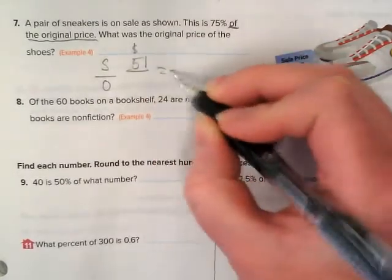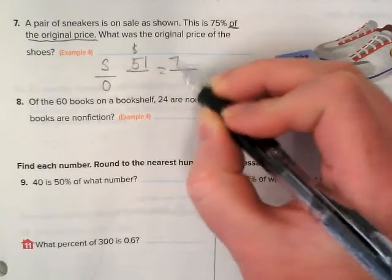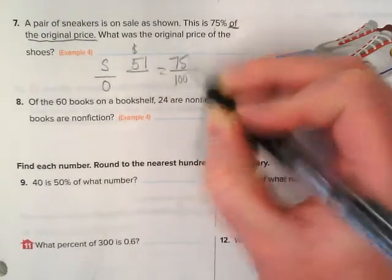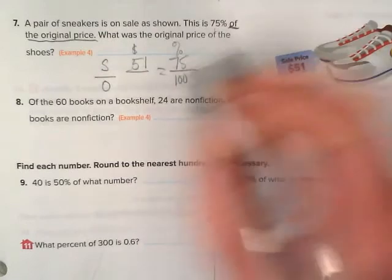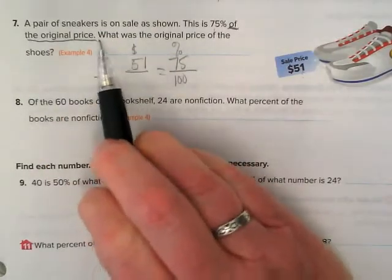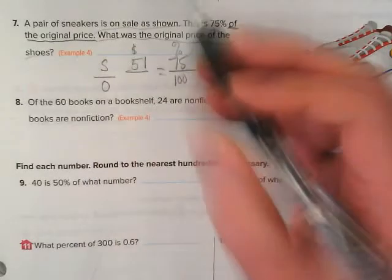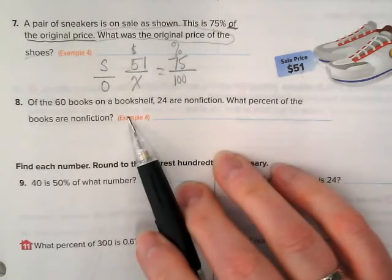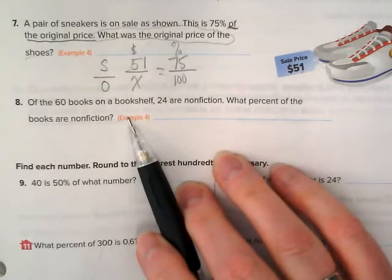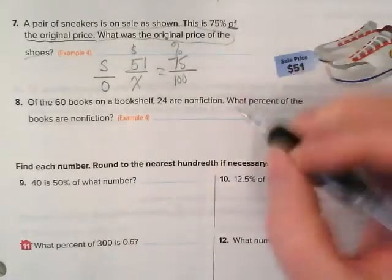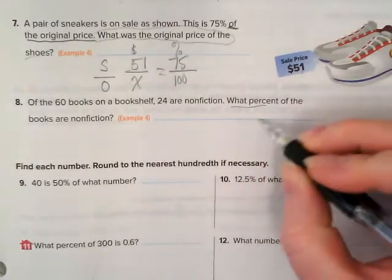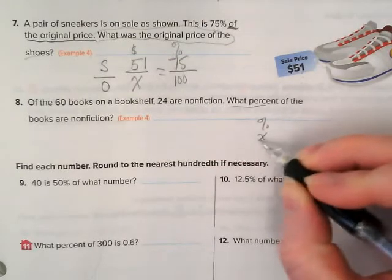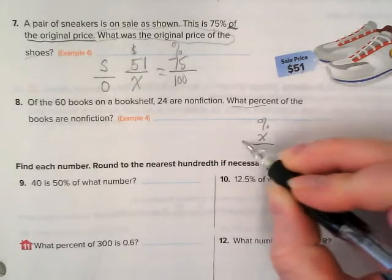Number 5, what percent of 50 is 18? Of 50 means it's the whole. Is 18, that's my part. We don't know what the percent is because that's the question, but we do know it's going to be out of 100. This one's nice because you wouldn't actually have to cross-multiply. 50 times 2 gives you 100, so you could do 18 times 2 to get the percent or cross-multiply.